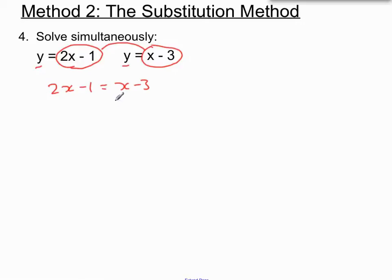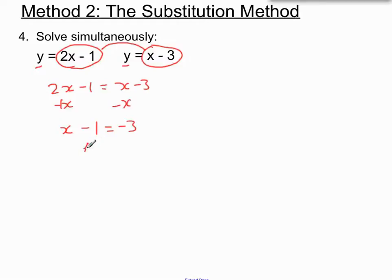This ends up being an equation with letters on both sides, and my method for that is to move the smaller letter term first. So let's minus x from both sides. Now 2x minus 1x leaves us with x, and we have minus 1 on the left-hand side. The minus belongs to the 3, so don't let that slip. To get x on its own, we'll add 1 to both sides — x equals minus 3 plus 1, which is minus 2.